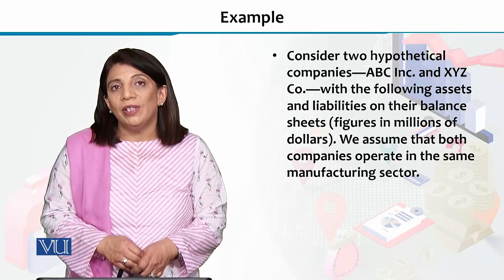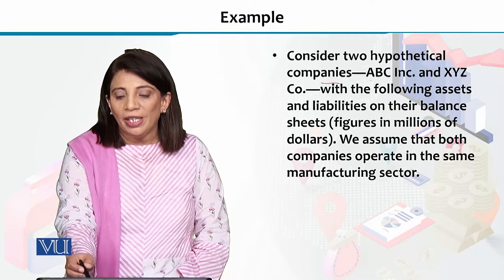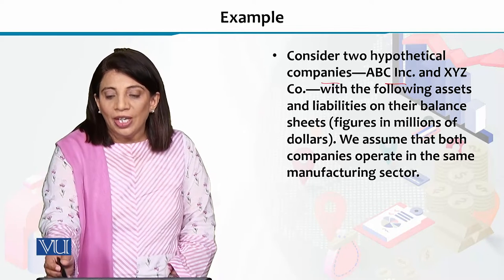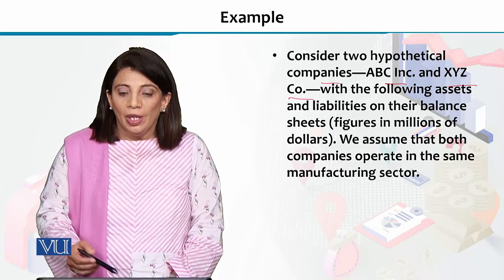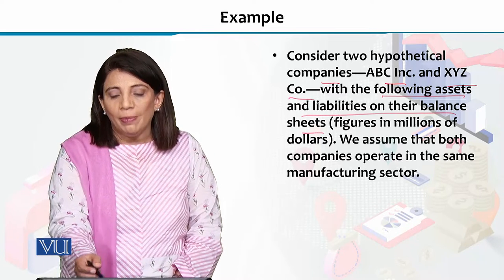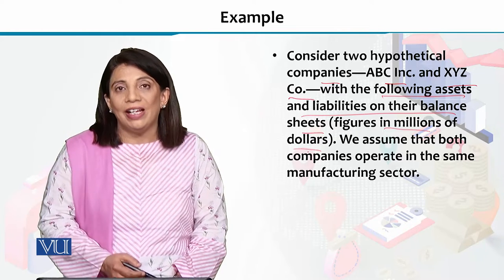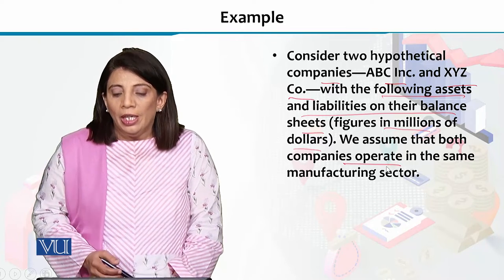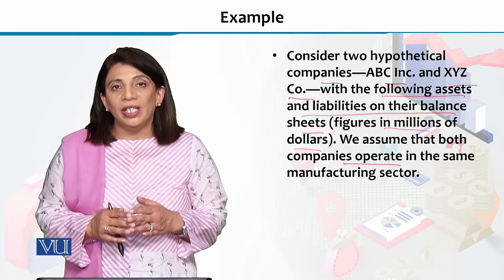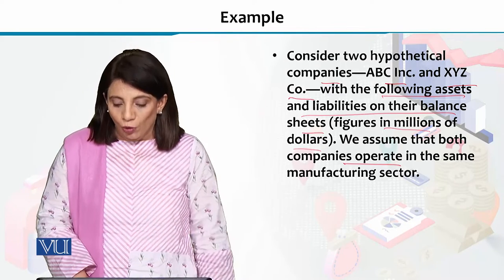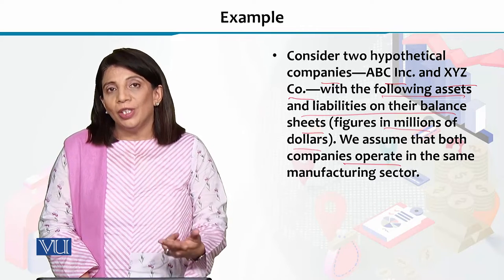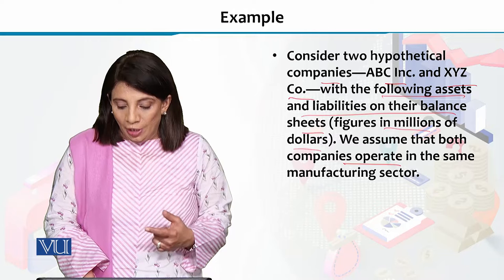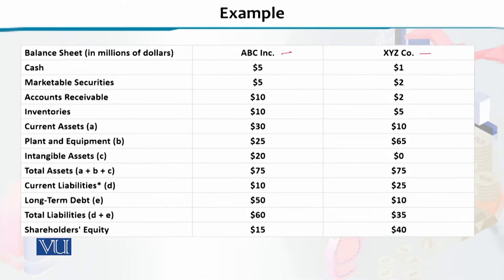Now, to interpret this, I will explain it with the help of an example. Suppose we have two hypothetical companies — one is called ABC Incorporation and the other is XYZ Company. Both have certain assets and liabilities on their balance sheets, and all values are given in millions of dollars. We are also assuming that both companies are operating in the same manufacturing sector.